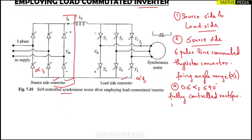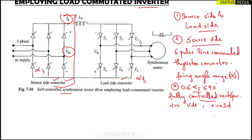...then the source side converter will work as a fully controlled rectifier. Here, id is the current and Vds is the voltage across this converter. Whenever the alpha-s angle is between 0 to 90 degrees, it will act as a rectifier and will deliver positive Vds and positive id.